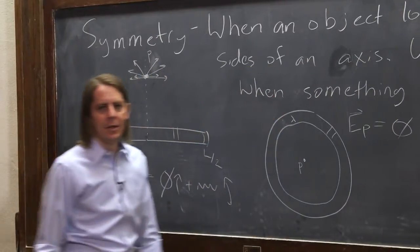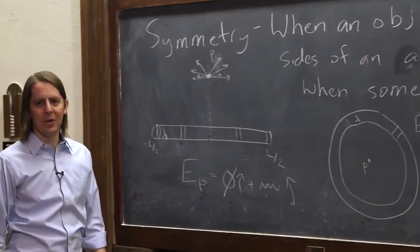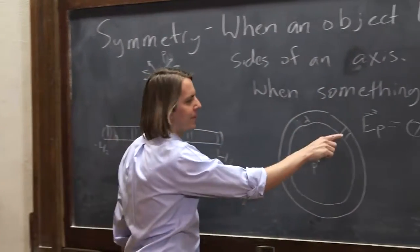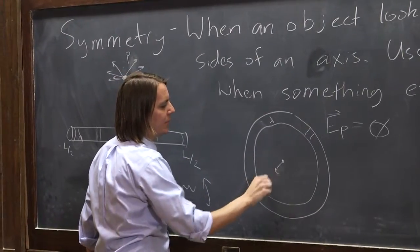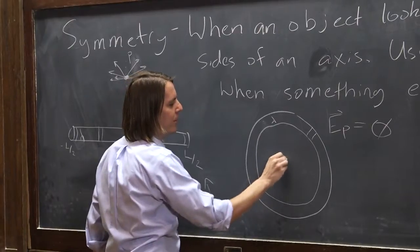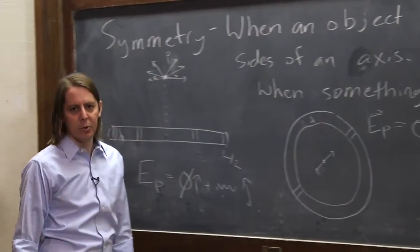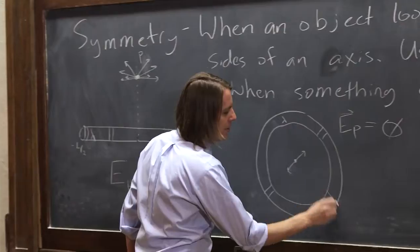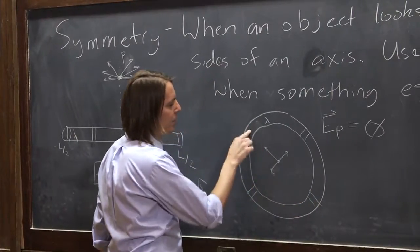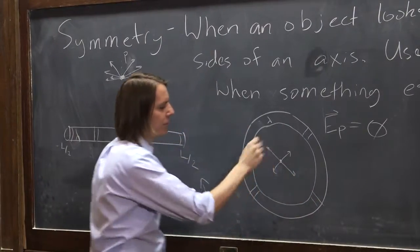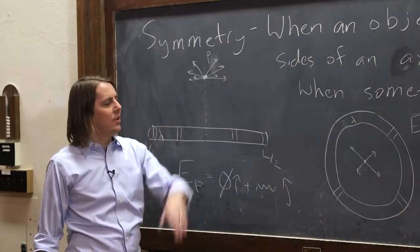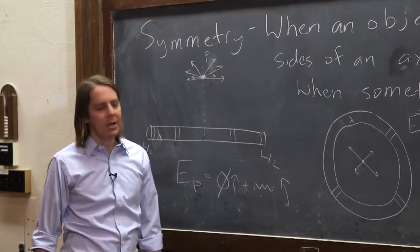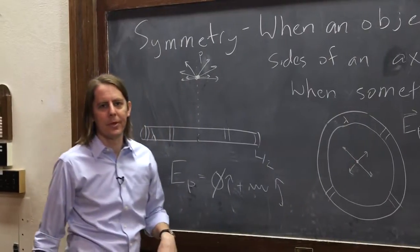...because I know that it's going to be zero by symmetry because for every dX here that has some q, some charge dq, that's going to create a field that way. And there's a symmetric one here that's going to create a field that way. And the two are going to cancel. For every one here that creates a field that way, there's going to be one here that creates a field that way. And the charges are going to cancel, or the fields are going to cancel. So you can instantly say that the E field in the middle is zero because you're at a point with a certain symmetry.